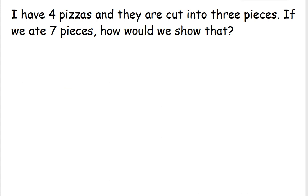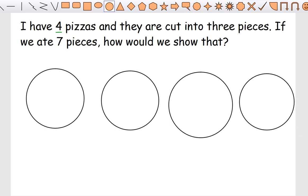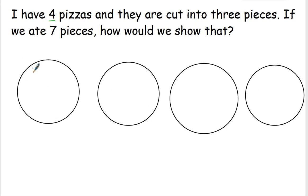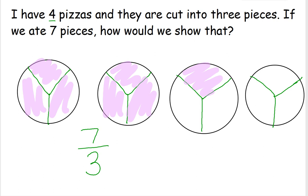Now I'm going to draw a picture. I have four pizzas and they are cut into three pieces. If we ate seven pieces, how would we show that? First I'm going to draw the four pizzas — one, two, three, four — and it's divided into thirds. Then it says they ate seven pieces of pizza, so I'm going to shade in seven pieces: one, two, three, four, five, six, seven. That's seven pieces broken up into thirds, so this looks like seven thirds.